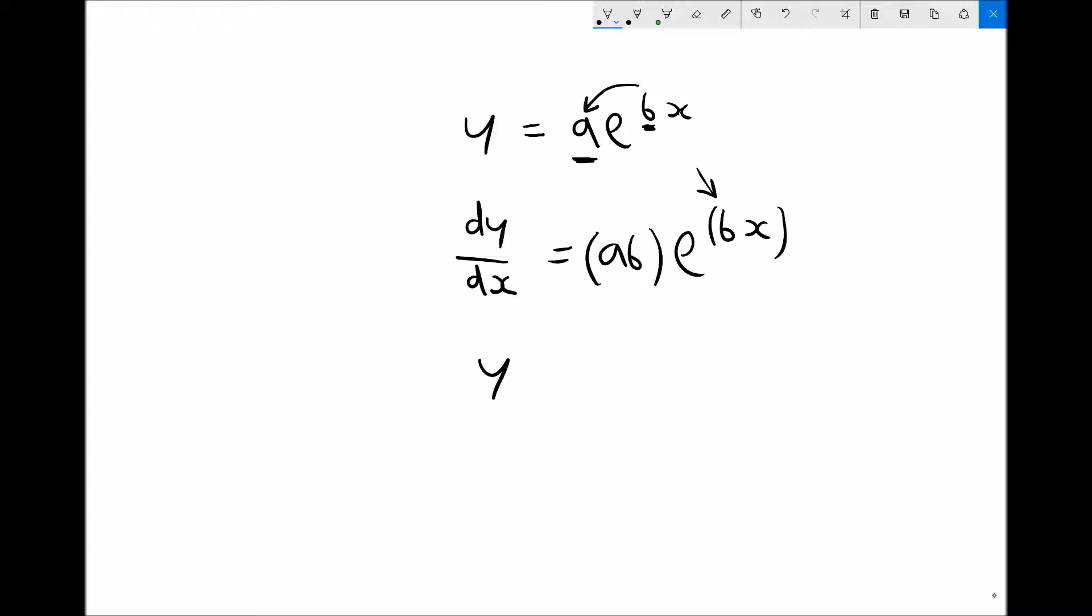So if we take an example, let's say we have 3e to the 2x. All we would do is multiply the 3 by the 2 and we would get dy by dx equals 6e to the 2x.